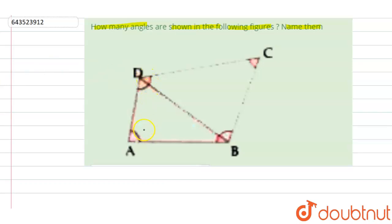So let's first count the total number of angles. This is angle number one, two, three, four, and there is one more big angle that is five, six, seven, and this angle is eight.